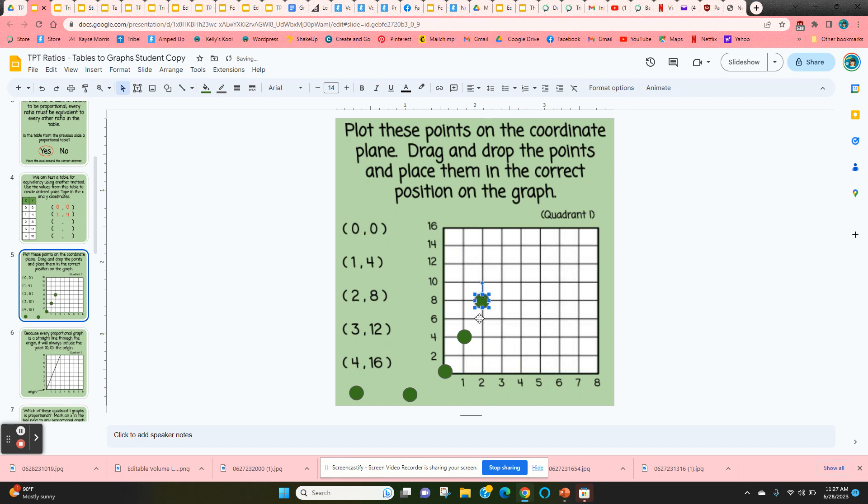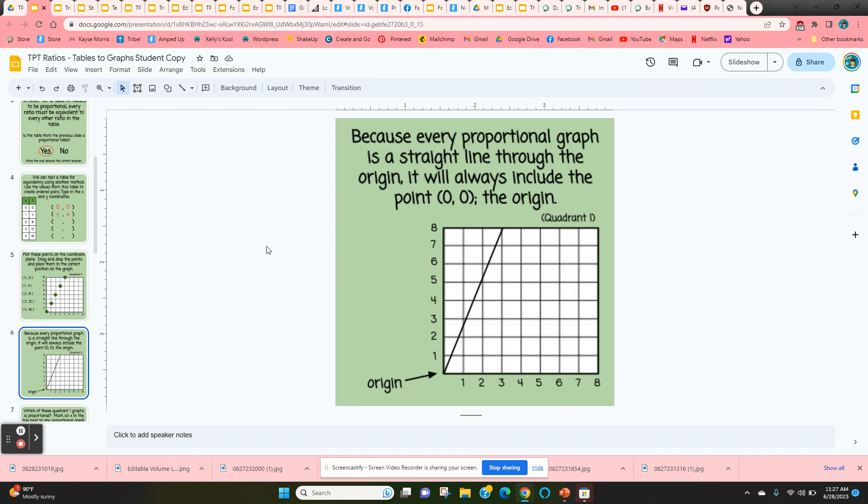Let's see, 3, 12, 4, 16. And once they have them plotted, they can see it's a straight line and it goes through the origin. Slide 6 just explains that if you look at a graph, you can see it's proportional by that straight line through the origin.